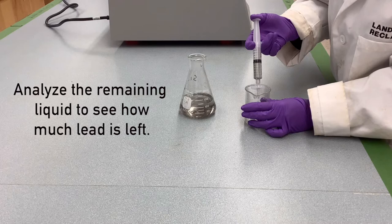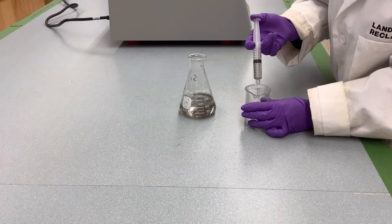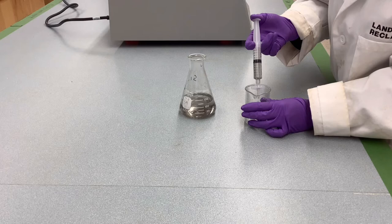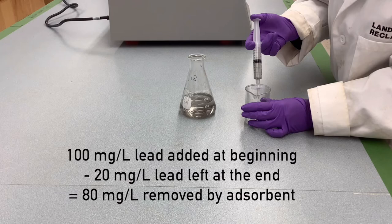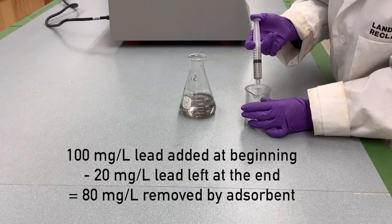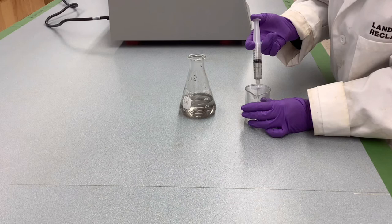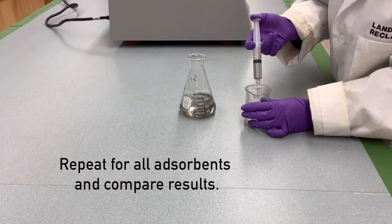Then we take the liquid that we filtered and we analyze how much lead is left in the sample in a commercial laboratory. This allows us to know how much lead the adsorbent removed. Essentially, if we know we put like 100 mg per liter lead at the beginning and there is like 20 left in the liquid at the end, then we know the adsorbent removed 80 mg per liter. We then repeat this with all of the adsorbents to see which removes the most lead.